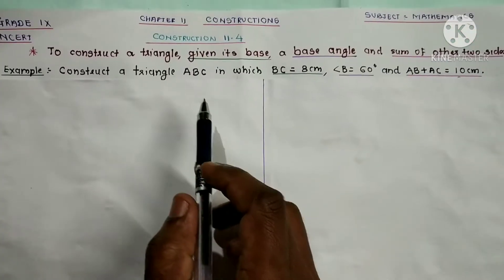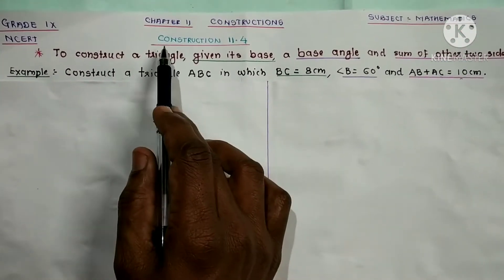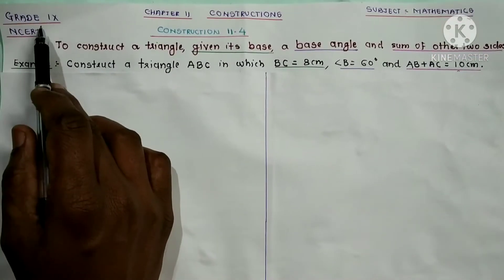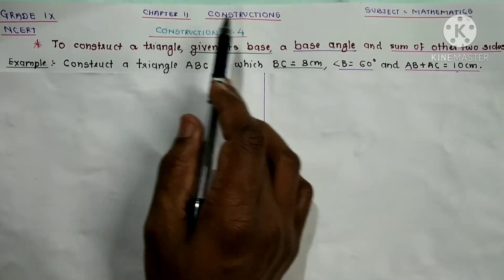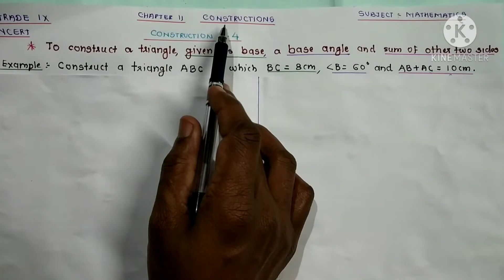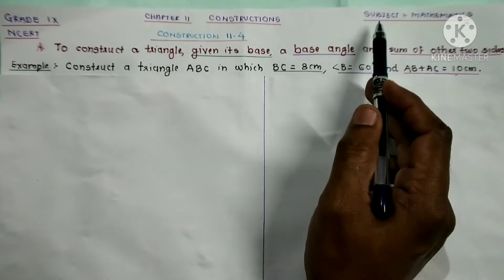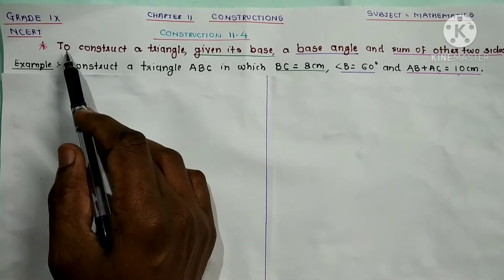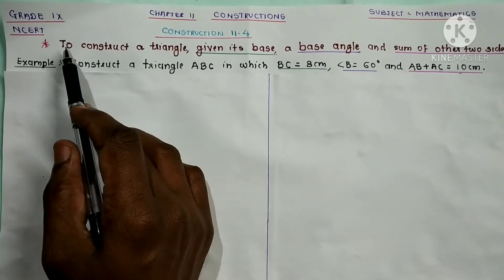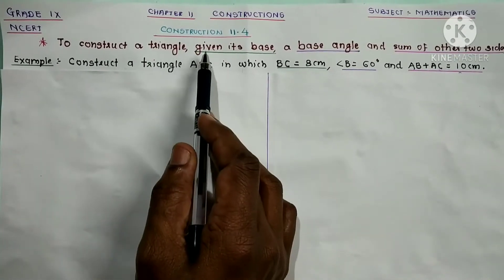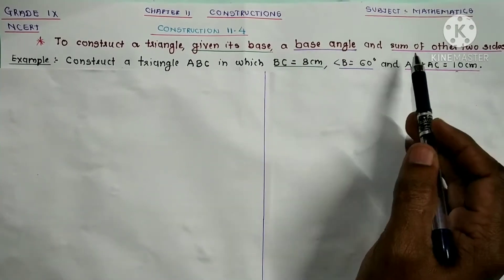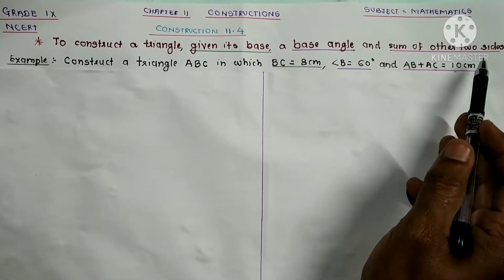Hello everyone, welcome to my channel. In this video we shall learn Construction 11.4 in standard 9th, chapter number 11, chapter name Constructions, subject Mathematics. Construction 11.4 is to construct a triangle given its base, a base angle, and sum of other two sides.